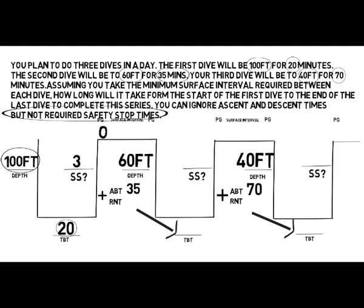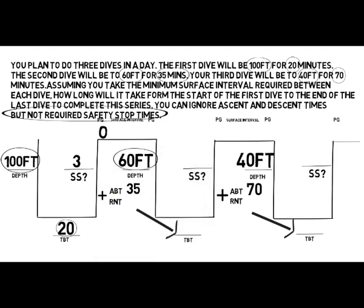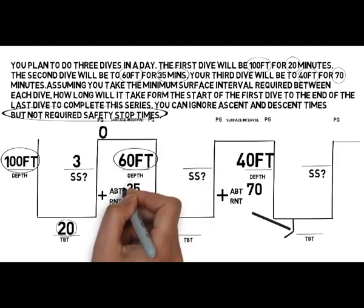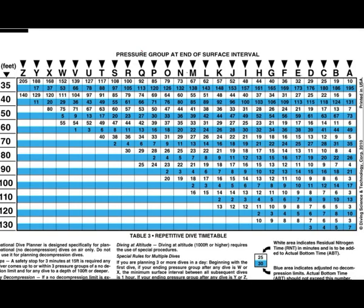Looking at the next blank, we have a surface interval and then a pressure group. We need to jump across to the second dive and take its depth and time to work out what pressure group we need to be in at the start of it. It's a 60-foot dive and we want to go for 35 minutes. Looking at the underwater numbers for 35 or greater — in this case 36 minutes — that tells us we need to be in pressure group F at the start of the second dive.